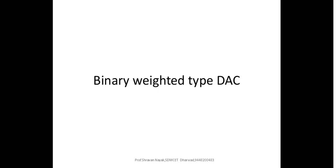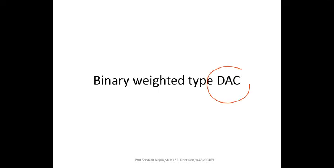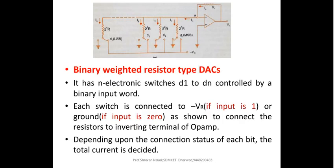Today we shall discuss the first type of digital to analog converter, which is referred to as the binary weighted type resistor DAC — binary weighted type resistor digital to analog converter. Let us try to see how exactly a binary weighted type resistor DAC looks like in its circuitry representation.